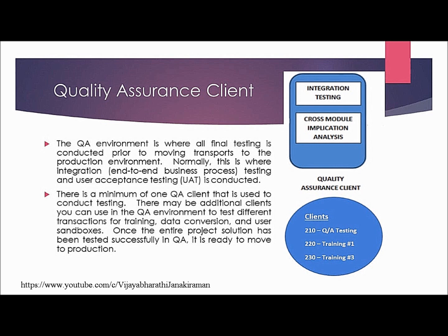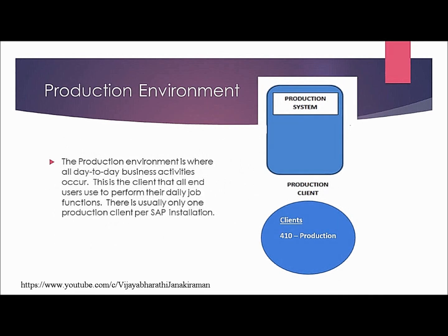Once the entire project solution has been tested successfully in the quality assurance client, it is ready to move to production. The production environment is where all day-to-day business activities occur. This is the client that all end users use to perform their daily job functions. There is usually only one production client per SAP installation.